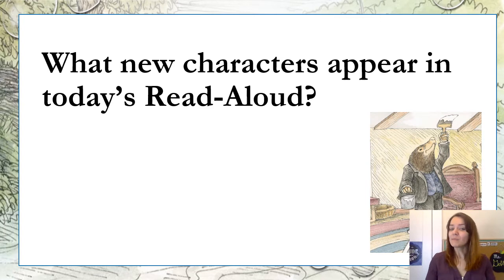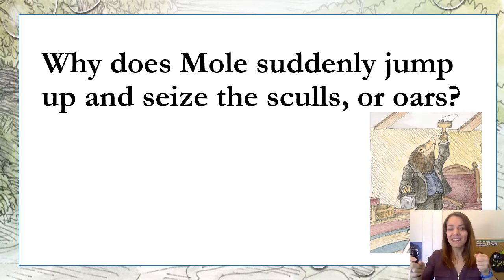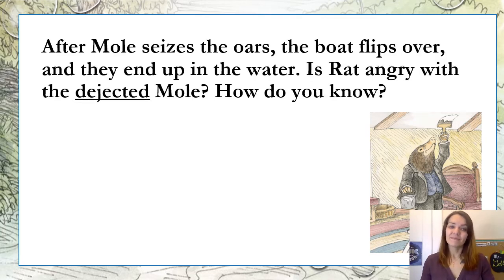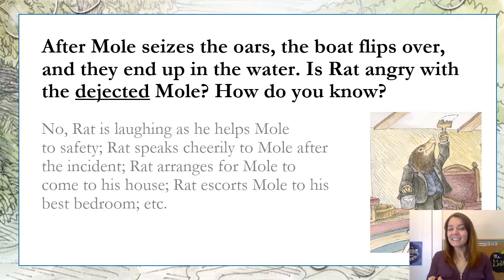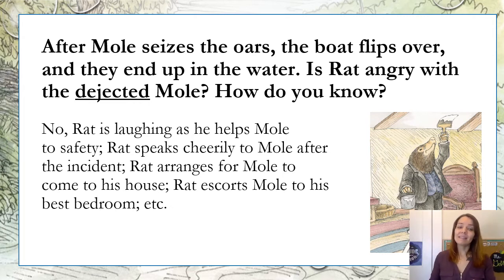So what new characters appeared in today's read-aloud? We saw Otter, Toad, and we briefly saw Badger. Why does Mole suddenly jump up and seize the sculls — the oars? He was jealous, and he was prideful for a moment — he wanted to show the Rat just how well he could row. After Mole seizes the oars, the boat flips over and they end up in the water. Is Rat angry with the dejected Mole? He's not — and how do we know that? Because he's laughing as he helps Mole to safety. He talks to him cheerily after the incident, says it's nothing for a water rat to be wet, and then arranges for Mole to come to his house and lets him stay in the best bedroom.